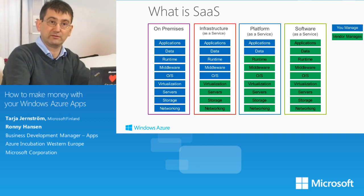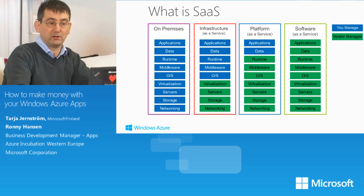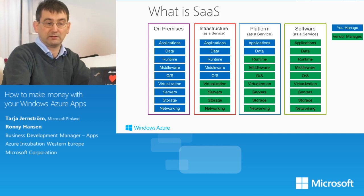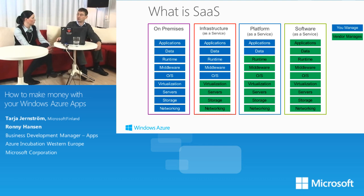We also have platform as a service, where Microsoft or the vendor manages all the levels from networking to runtime, and you run your application on top of that. As an ISV, you probably want to offer software as a service so your customer sees your solution as software and doesn't have to run anything on premise. In my opinion, Windows Azure is the best offer and best functionality for platform as a service.